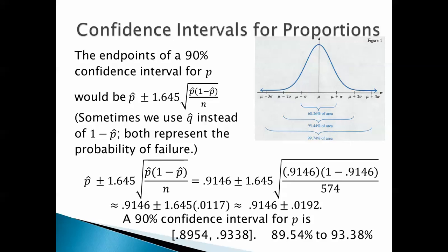Here's our 90% confidence interval. You have p hat plus or minus 1.645 times the square root of p hat times 1 minus p hat over n. p hat, that's the proportion of successes. There was a 91.46% probability of success, so as a decimal, p hat is 0.9146.